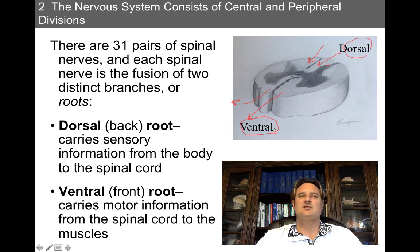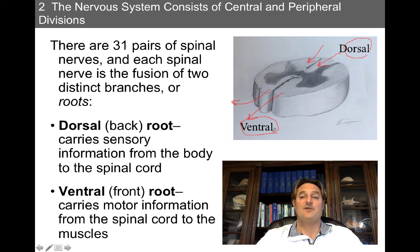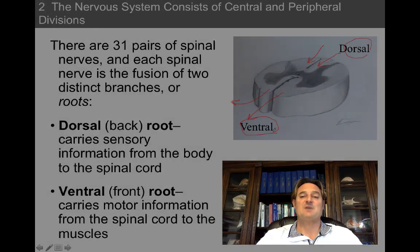This is similar to the brain. The brain sends incoming information and projects it directly to the occipital lobes, which are in the back of the brain, and the front of the brain is more involved in motor functioning — kind of like the dorsal and ventral roots of the spinal cord.